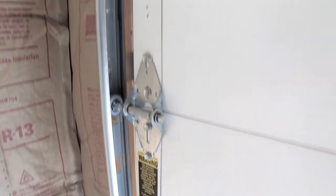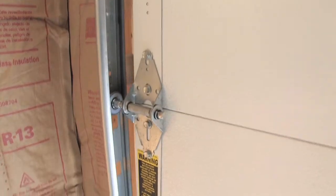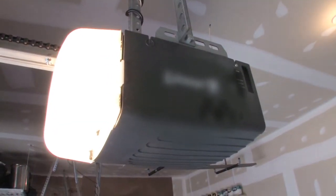As you can see, there's a lot of pieces and parts to this moving object, some being hinges, springs, rollers, cables, a garage door opener above our heads here.